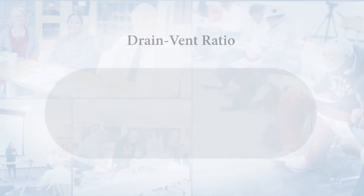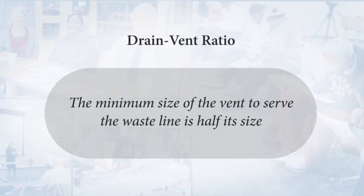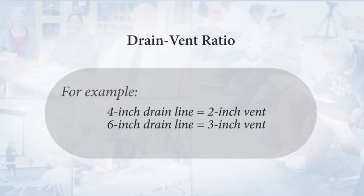Code dictates that for any waste pipe system, the minimum size vent to serve that waste line is half its size. So a four-inch drain line requires a two-inch vent, and a six-inch drain line requires a three-inch vent. It can't be less than half.